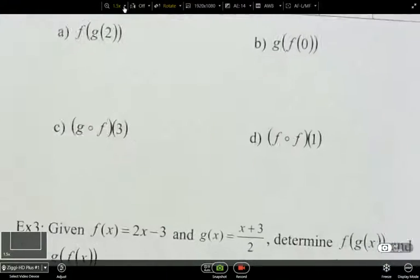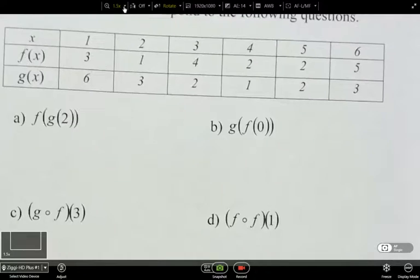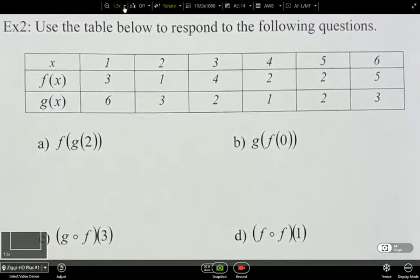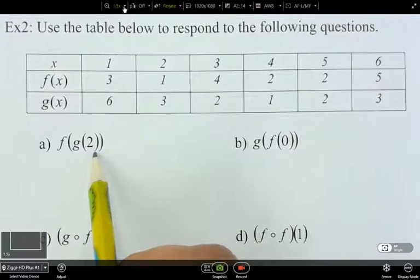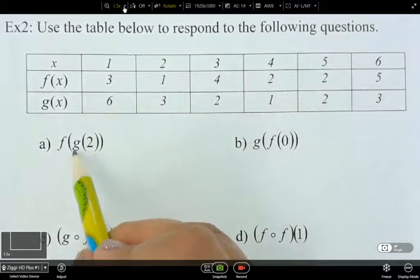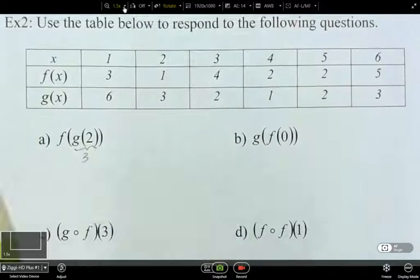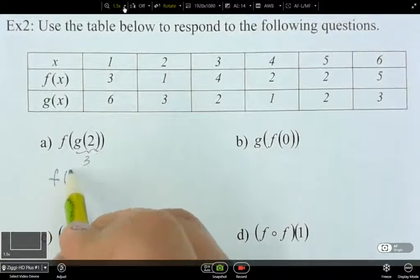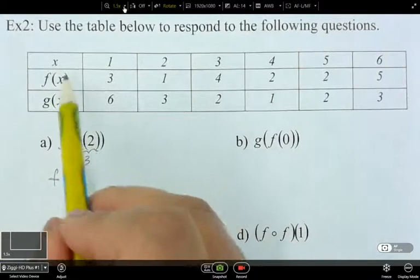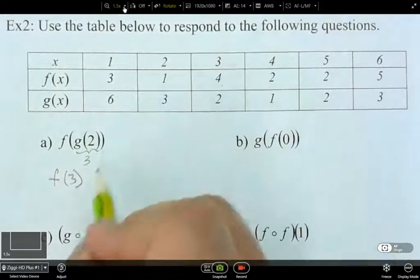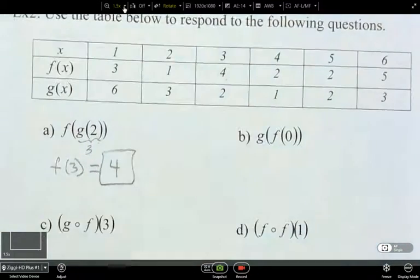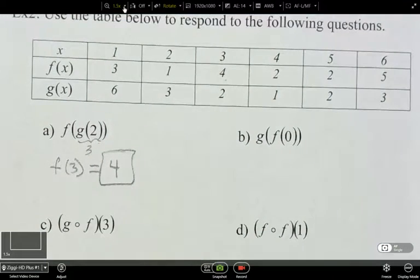So let's use this table of values. Use the table below to respond to the following questions. So we have to figure out what f of g of 2 is, based on this table of values. So what do I need to figure out first? What's g of 2? g of 2 is 3. So what do I need to figure out now? f of 3. What's f of 3? So f of 3 is 4. So then my answer is 4.